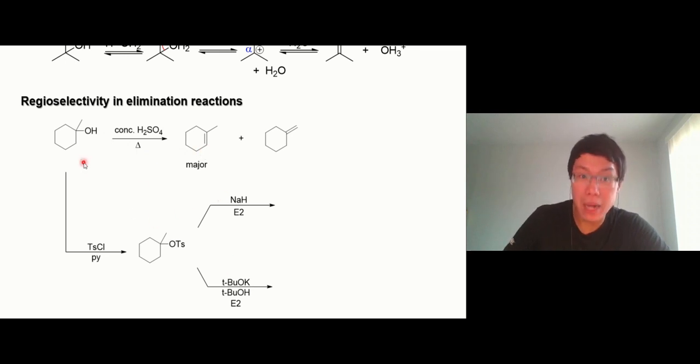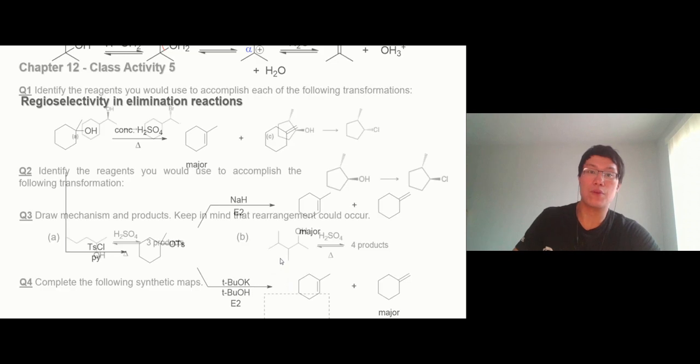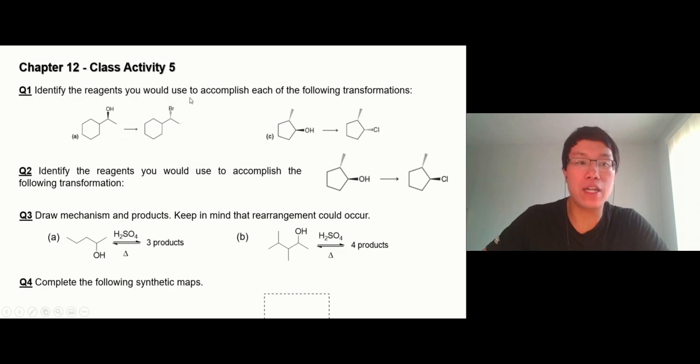You can also do E2, but you have to convert the OH to a better leaving group first. Using sodium hydride, you'll get the more substituted alkene as the major product. If you use a big bulky base like tert-butoxide, you'll get the less substituted alkene.